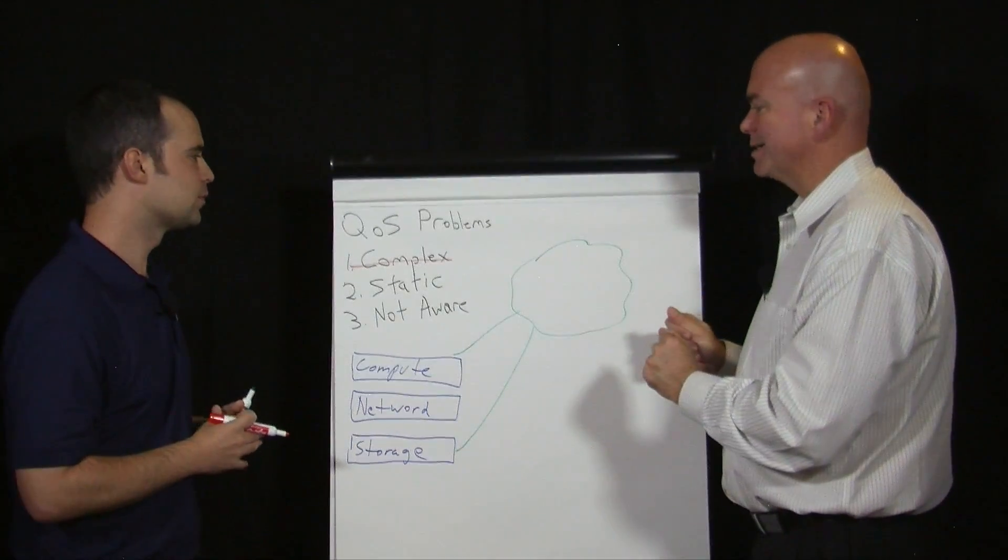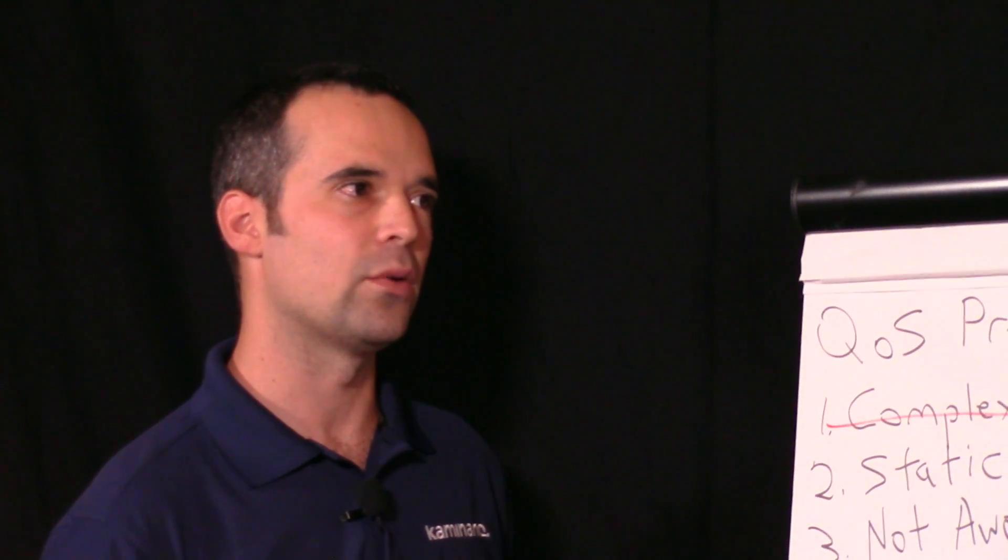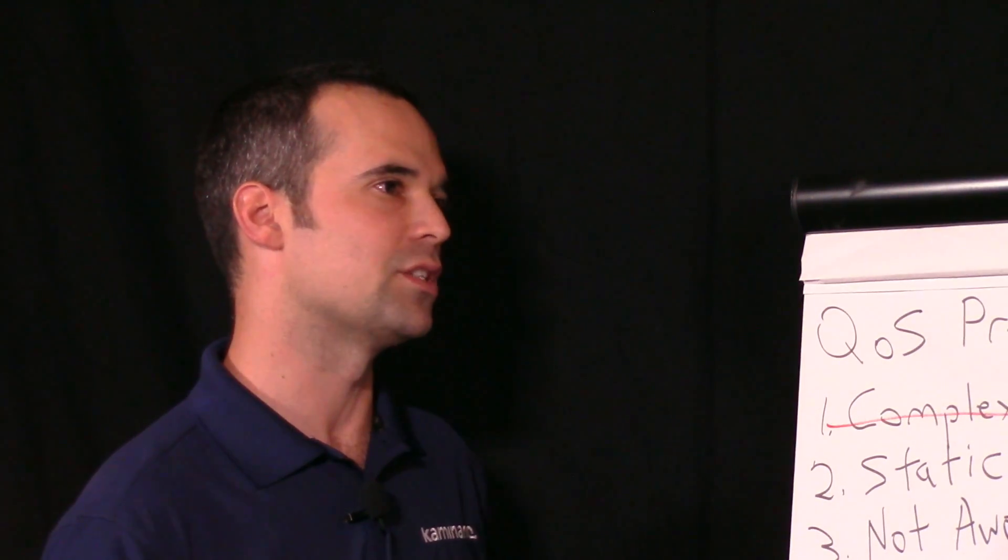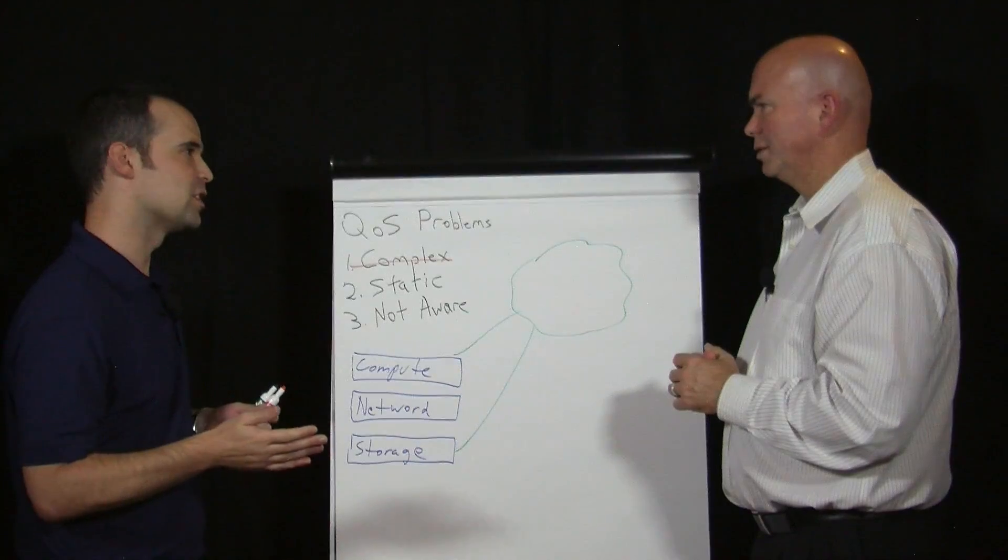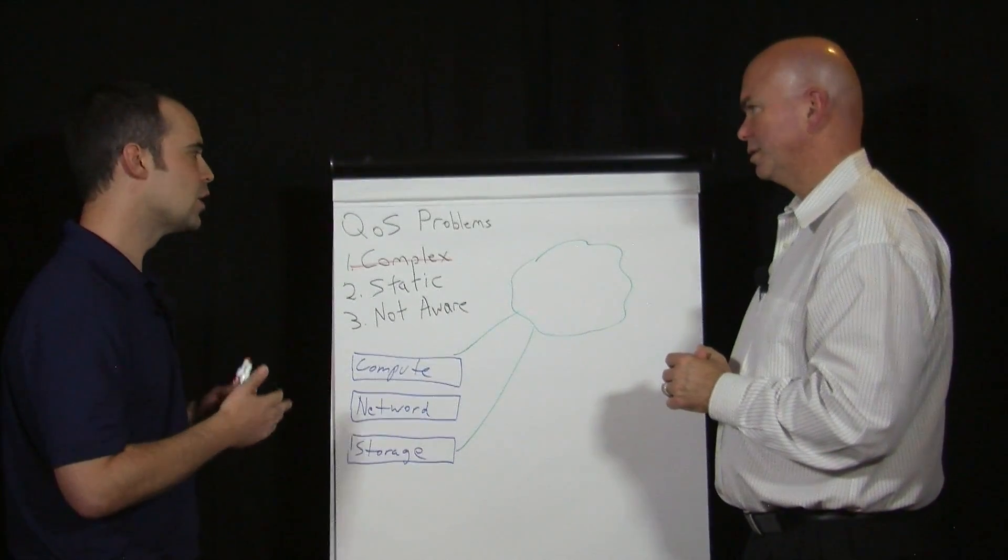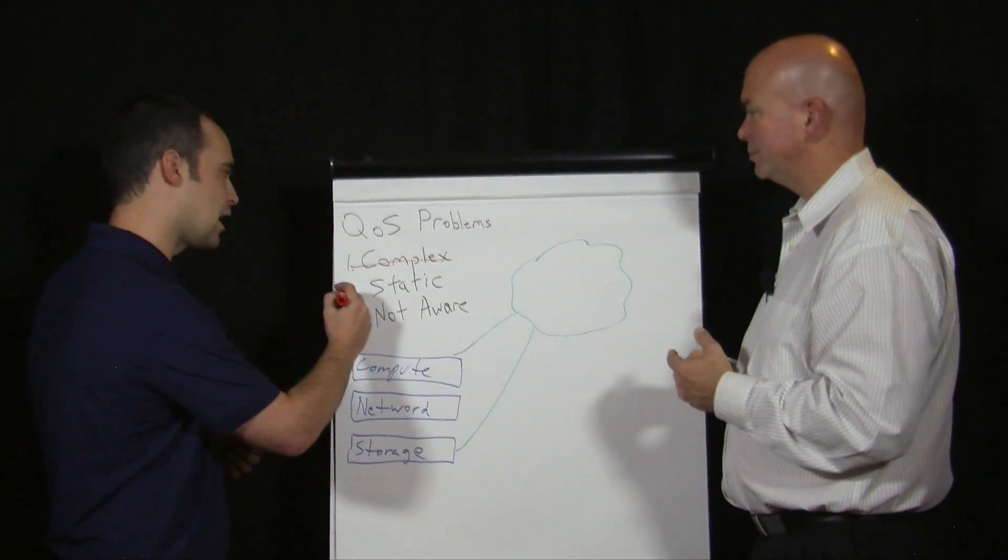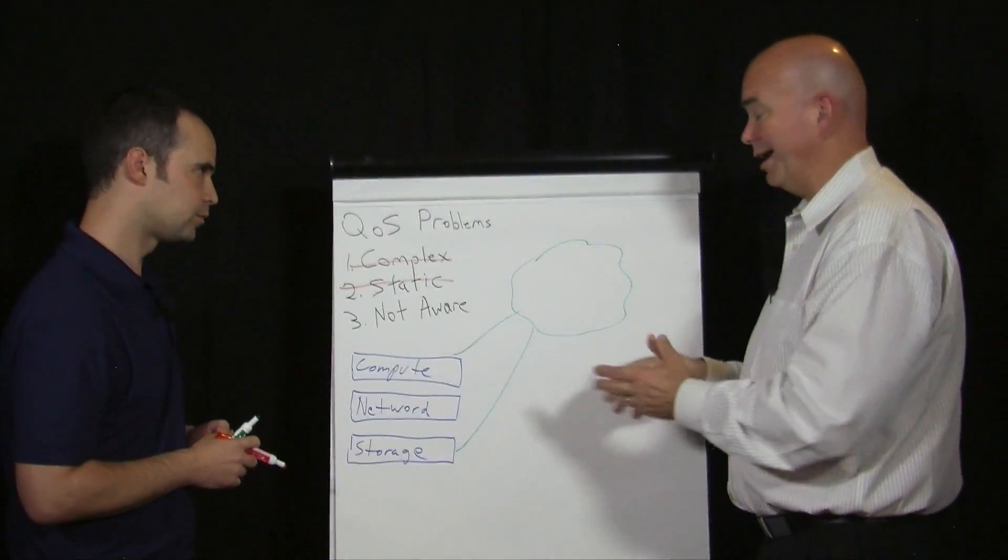All right. So that takes care of complexity. So let's talk about the problem of being static, the inability to change to the environment. We use our RESTful API, which allows us a very broad integration with all the environments, be it network or compute, different hypervisors, different management suites. Really, there's no limitation to what we can achieve. So that's got to appeal to both service providers as well as large enterprises. So static, gone.